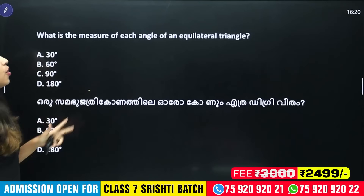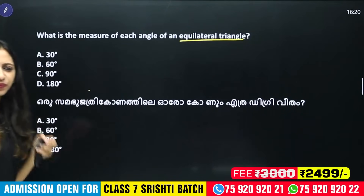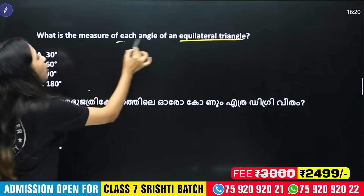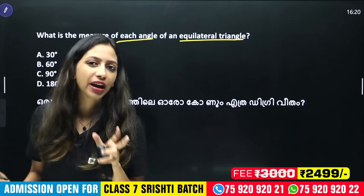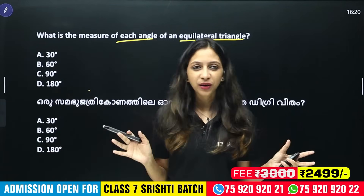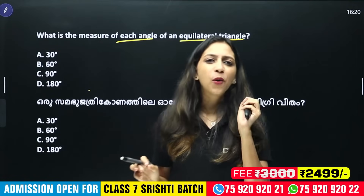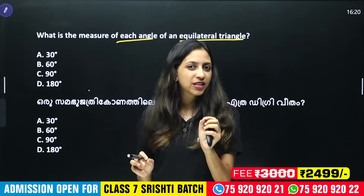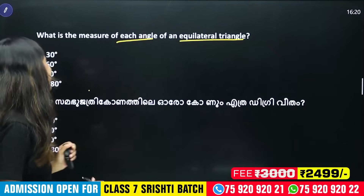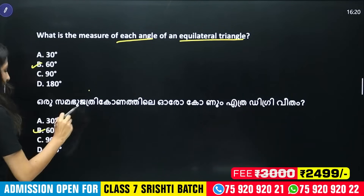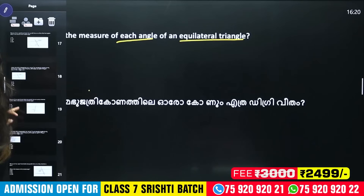If we have an equilateral triangle, all sides are equal and all angles are equal. Each angle is 60 degrees. This is very simple.